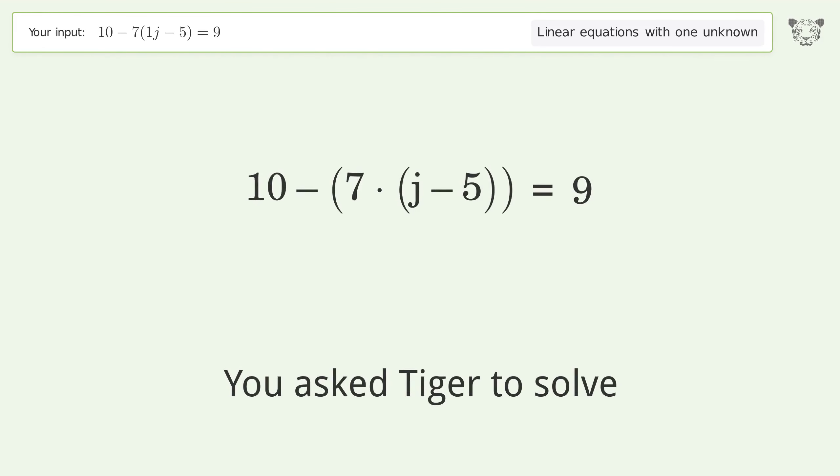You asked Tiger to solve this. It deals with linear equations with one unknown. The final result is j equals 36 over 7.